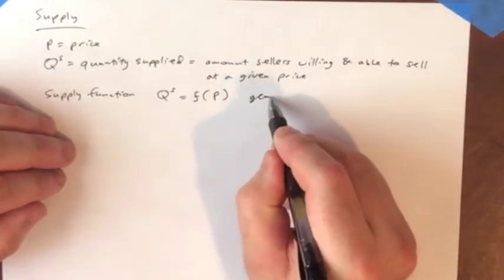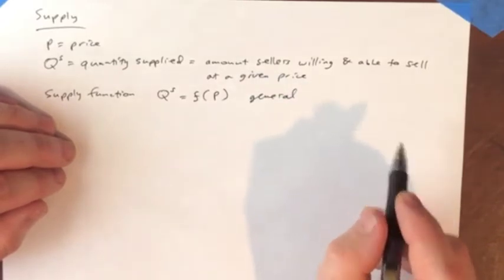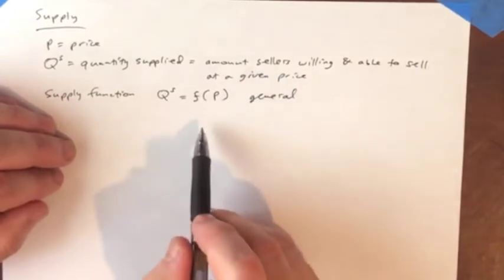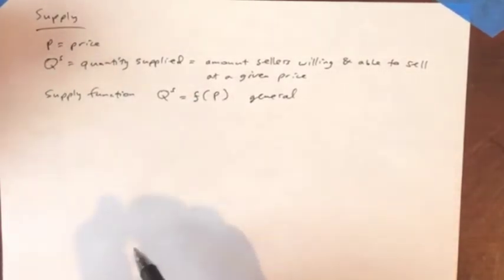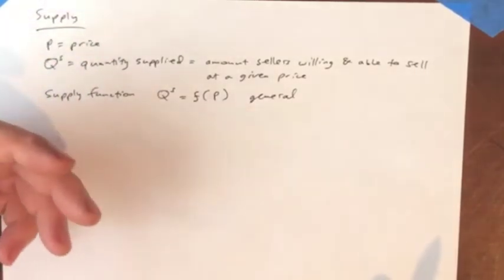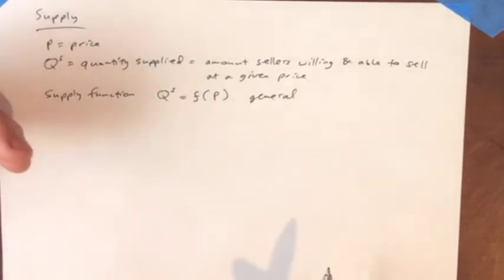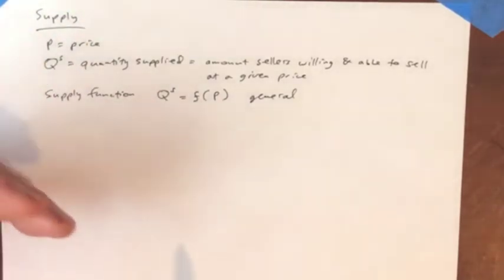There is a thing called a supply function. A supply function says the quantity supplied is a mathematical function of price. This is the general format of this function. It doesn't tell us exactly what the relationship is, just these are the variables.